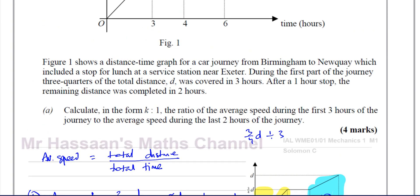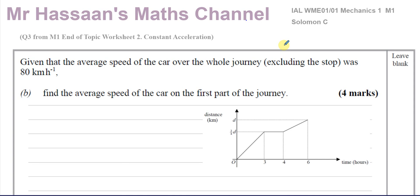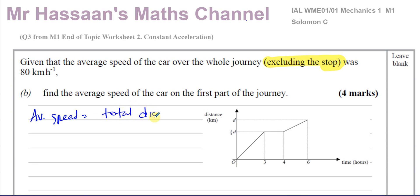Now for part b. Given that the average speed of the car over the whole journey, excluding the stop, was 80 kilometres per hour, find the average speed of the car on the first part of the journey. Excluding the stop is very important — so the total time is three hours plus two hours, which is five hours, not six. So d divided by five equals 80.